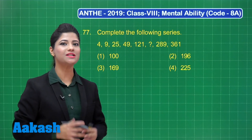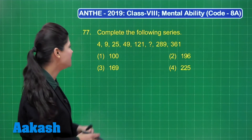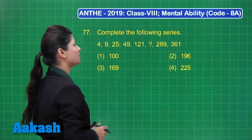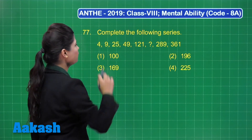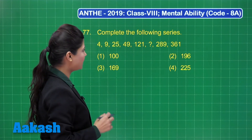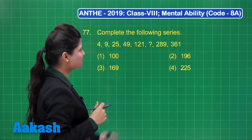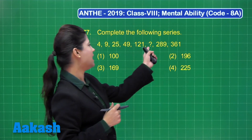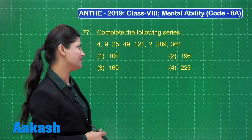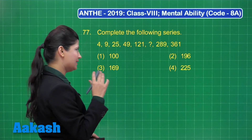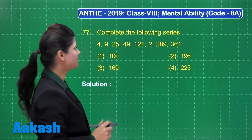Let's discuss question number 77. It states: complete the following series. In this series, we have the numbers 4, 9, 25, 49, 121, then a missing number, and the next two numbers are 289 and 361. Let's find this missing number out of the four given options.